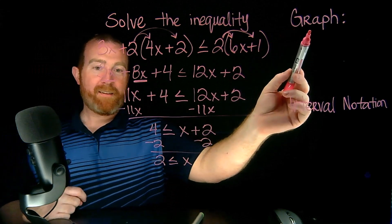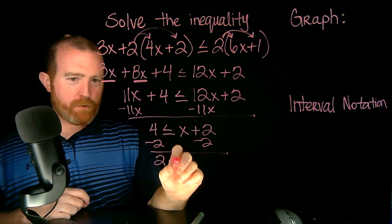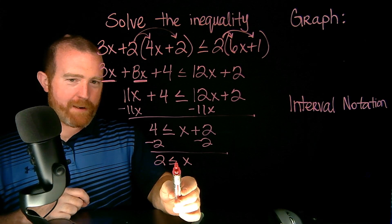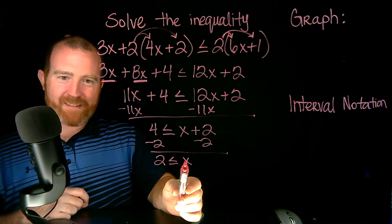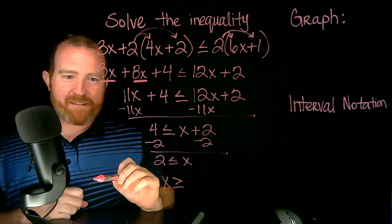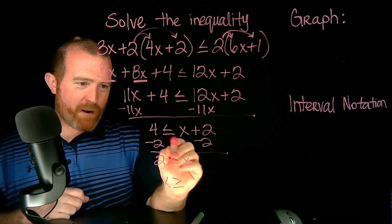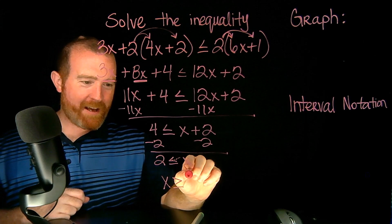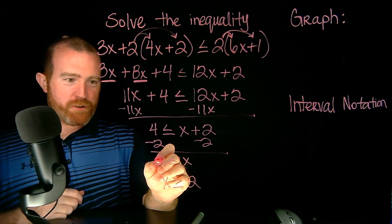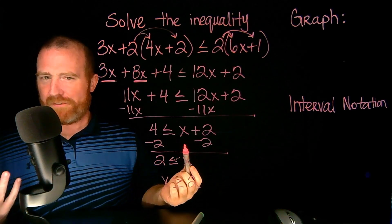When you're graphing the inequality, it's easiest to have X on the left. Look at the inequality — the less than or equal to is like a mouth, and that mouth is eating the X. If I swap, the mouth still eats the X. Or think of it like an arrow: that arrow is pointing to the 2, and it still has to point to the 2. So both of these are the same thing: 2 is less than or equal to X, or X is greater than or equal to 2. Same thing.